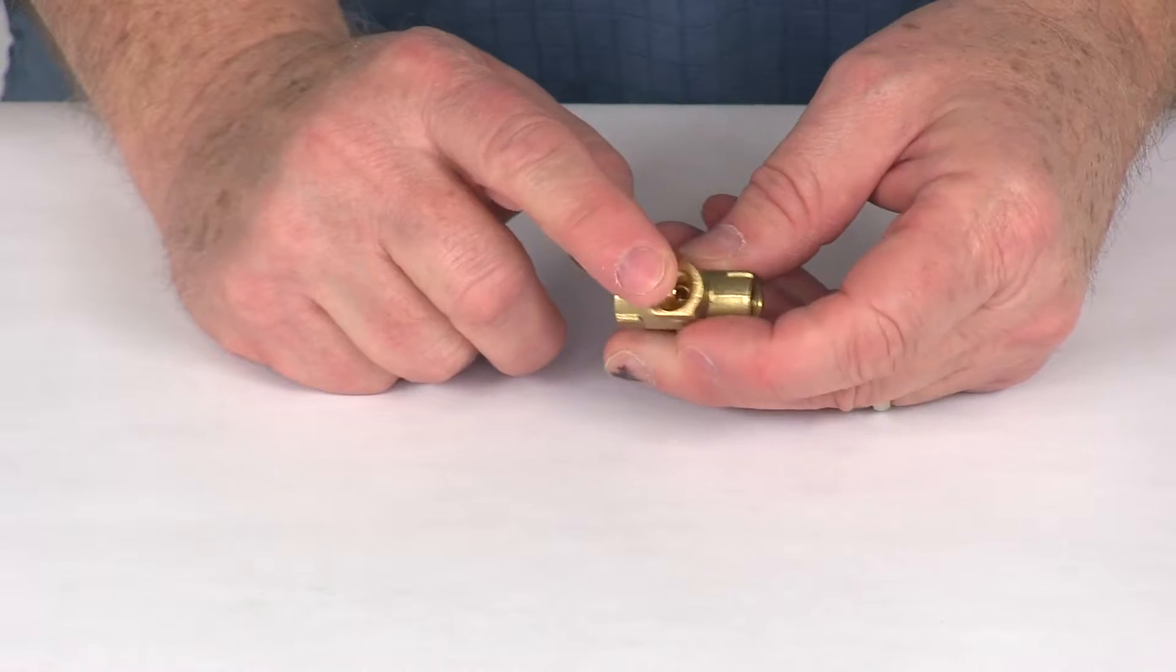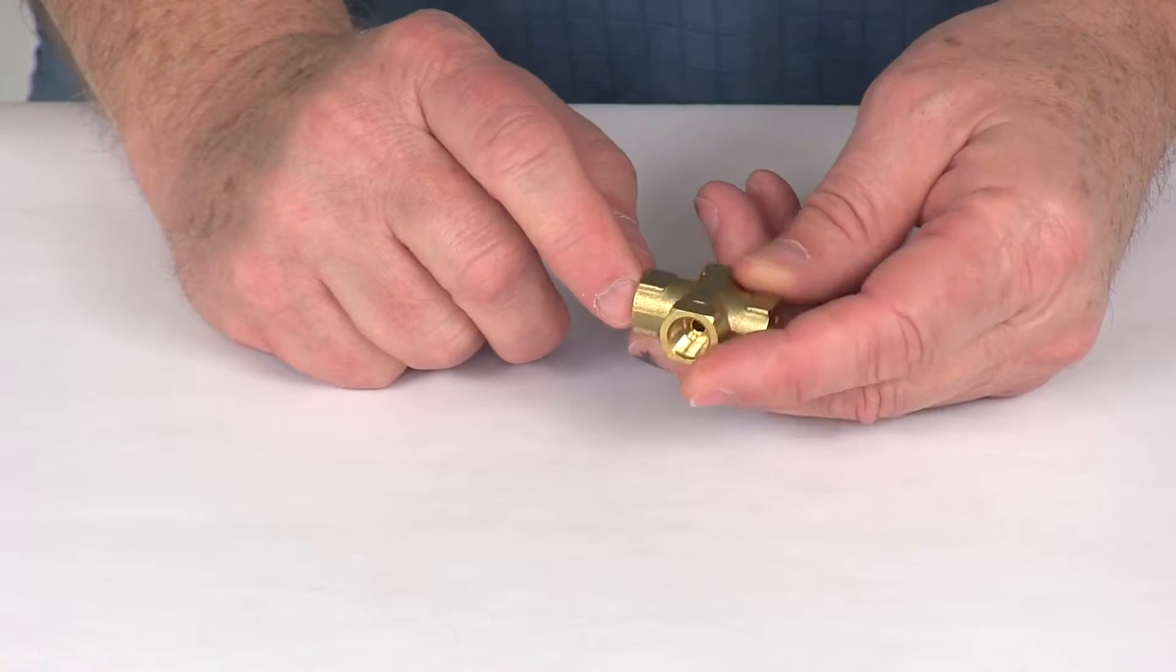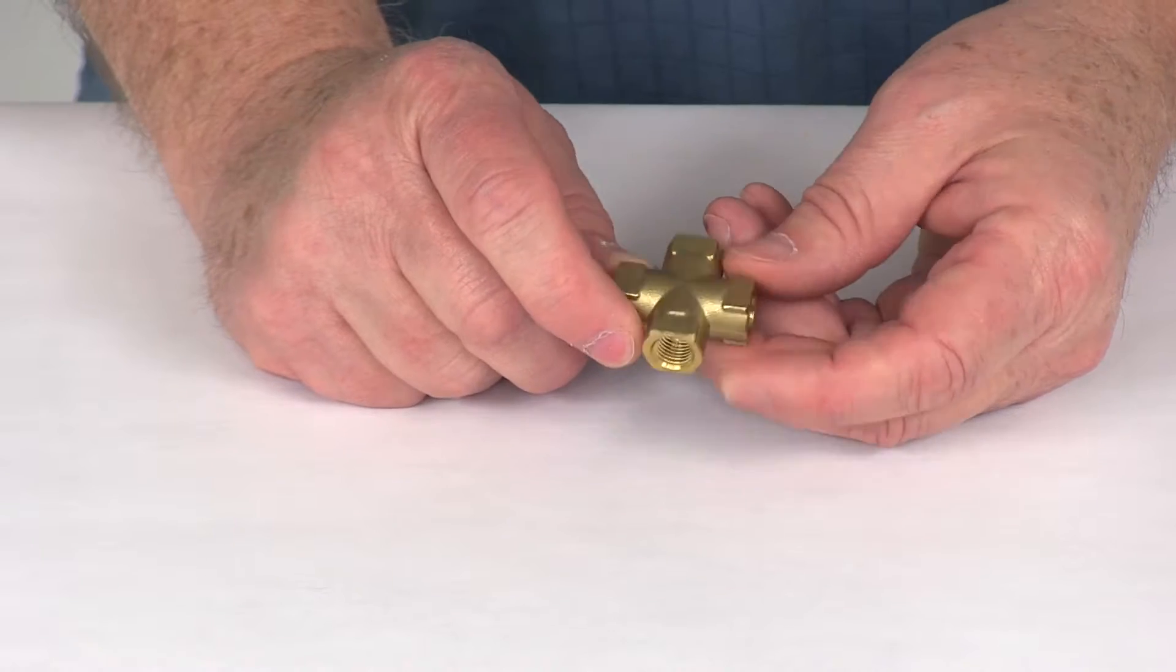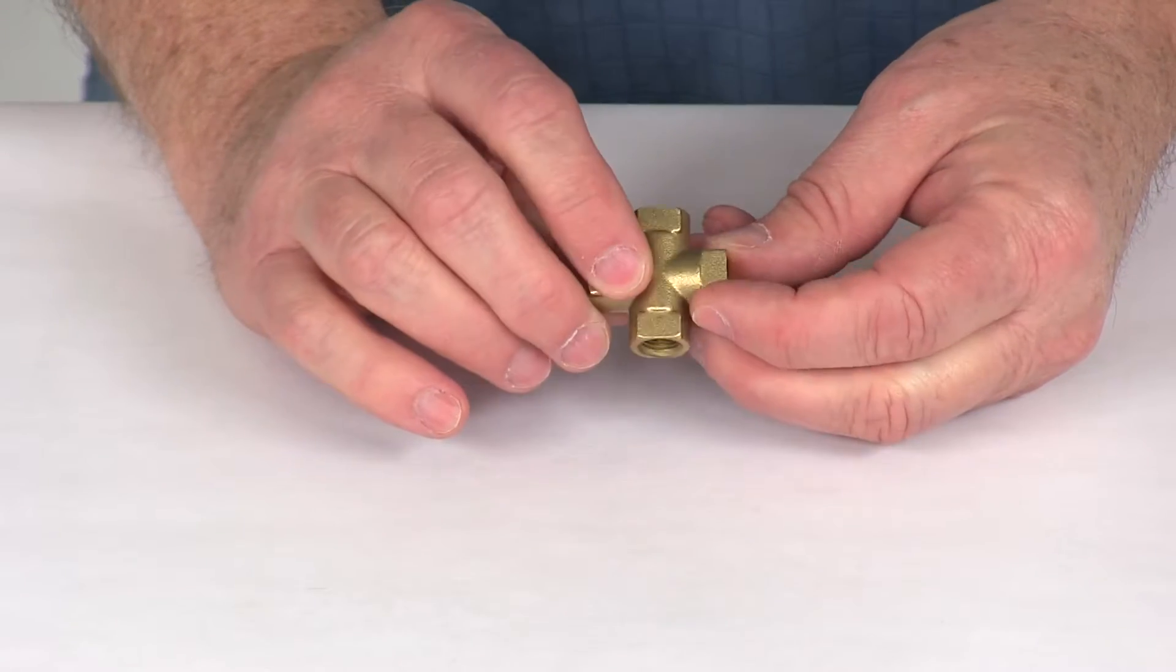They have the female inverted flares at each port and use deep threads to improve the connection and help prevent any leaks. This is a corrosion resistant brass construction.